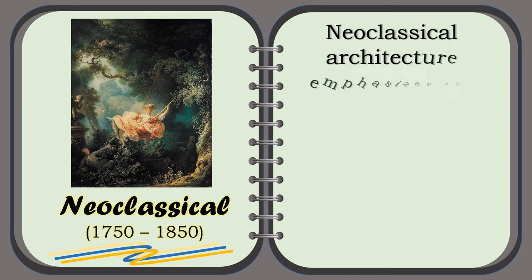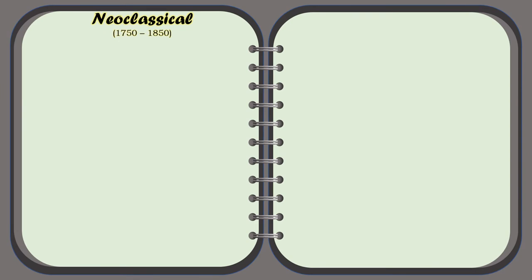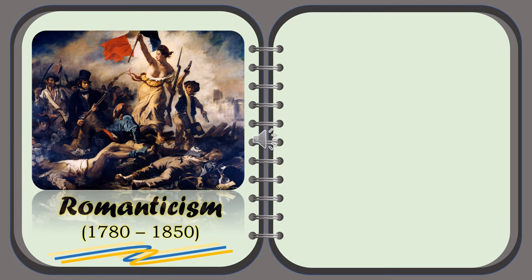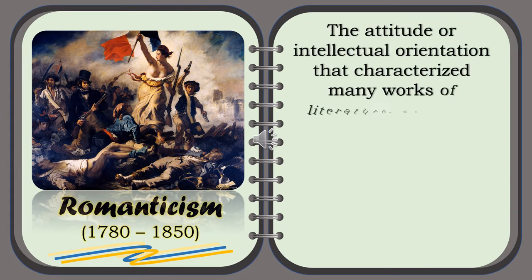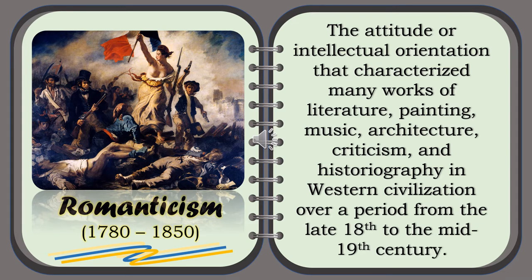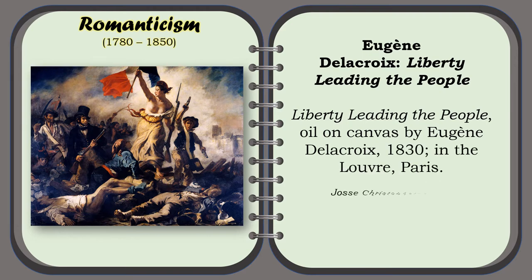The Neo-Classical architecture emphasizes the wall rather than chiaroscuro, and maintains separate identities to each of its parts. For example, the Cardinal and the Doctor, a chiaroscuro woodcut by Ugo da Carpi. The attitude or intellectual orientation that characterized many works of literature, painting, music, architecture, criticism, and historiography in western civilization over a period from the late 18th to the mid-19th century. For example, Liberty Leading the People, oil on canvas by Eugène Delacroix, 1830, in the Louvre, Paris.